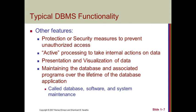Some other features include protection or security measures to prevent unauthorized access. DBMS users are given usernames and passwords so that only authorized persons can access it. Active processing means giving the right authorization to take internal actions on data — for example, a cashier in a bank is only allowed to receive and give amounts; some operations are only permitted to him and he is not allowed to sanction a loan. Such controlled data access is called active processing with internal actions for a specific person. Presentation and visualization of data means data in the database can be visualized according to the end user's preferences.